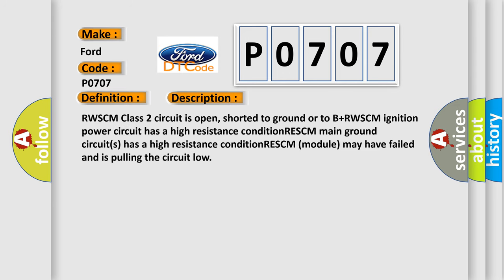RWSCM class 2 circuit is open, shorted to ground or to B+. RWSCM ignition power circuit has a high resistance condition. RWSCM main ground circuits has a high resistance condition. RWSCM module may have failed and is pulling the circuit low.